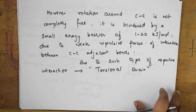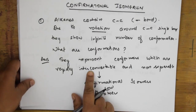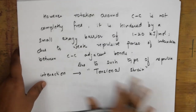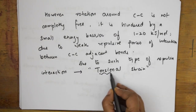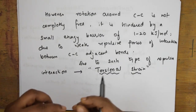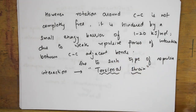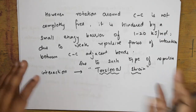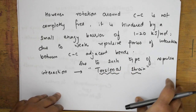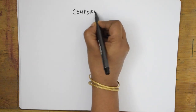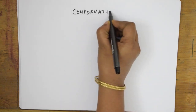Now we will apply these concepts to conformations of ethane. Because of the carbon-carbon single bond, the ethane molecule starts rotating and shows different conformers. We study these using sawhorse and Newman projection formulas. Ethane's molecular formula is C2H6.